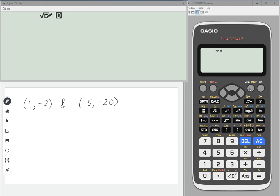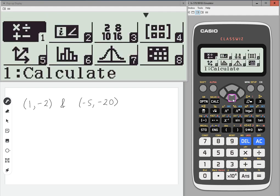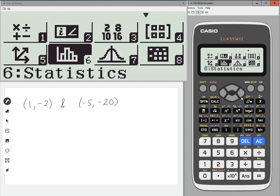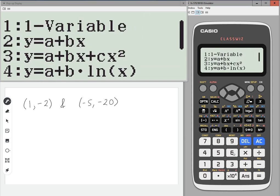What you do is go to menu on your calculator and then scroll down until you hit number six, statistics. We're going to go into y equals a plus bx, so option number two.